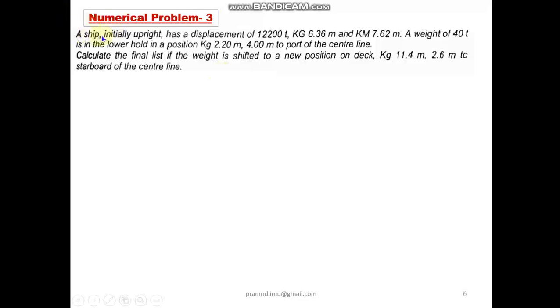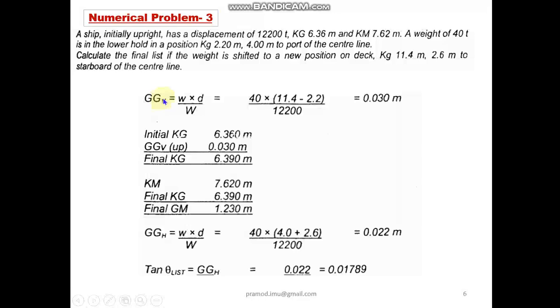So clearly this question is one in which there is a shift of mass, and it is said that the ship is initially upright. Again, if I can tell you, the term upright or even keel means no list condition. Clearly stated that our ship is upright. From this position there is a shift of mass from a lower hold to the deck. The position is given and we need to calculate what is the final list because of this movement of the mass.